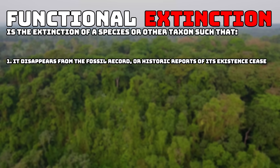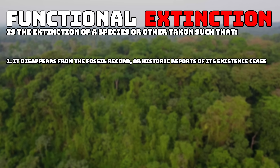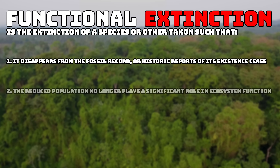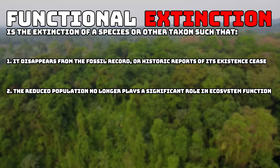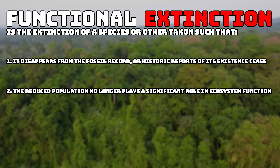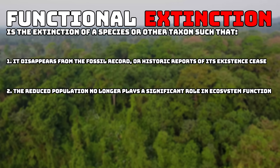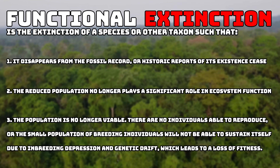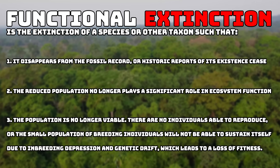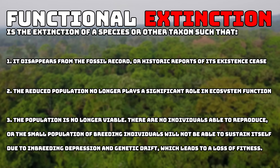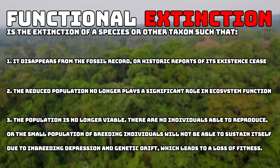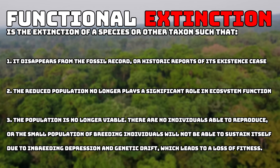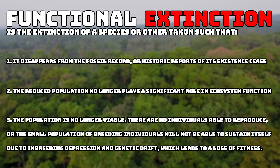It can be a species that disappears from the fossil record or historic reports of its existence cease. It can be a species that has a reduced population that no longer plays a significant role in an ecosystem's function. Or it can be a species that has a population that's no longer viable, or has individuals that are no longer able to reproduce, either due to a small population, inbreeding depression, or genetic drift.